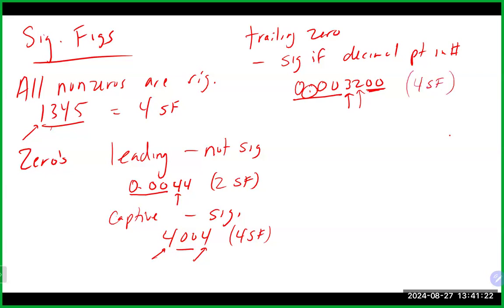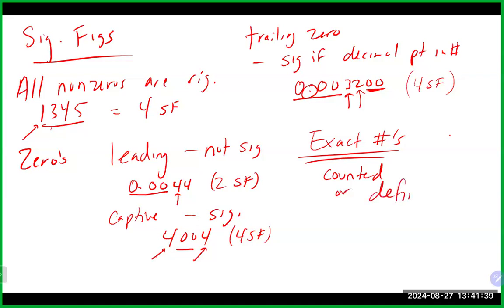Significant figures come from measurements and measured values. There are also exact numbers — things that are counted or definitions, like 12 inches equals 1 foot. Exact numbers have an unlimited number of significant figures. When we do calculations that involve exact numbers, we ignore them in the calculation and only look at the measured values that have significant figures associated with them.